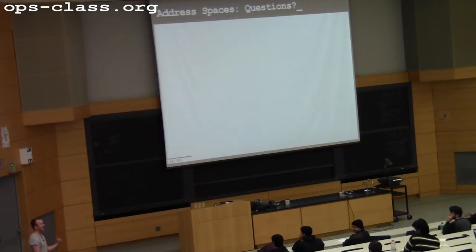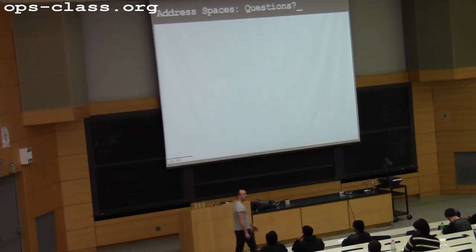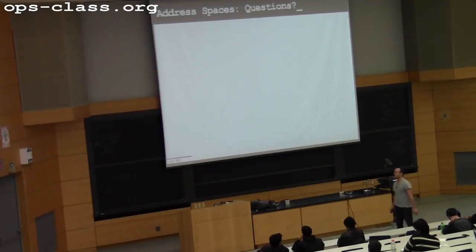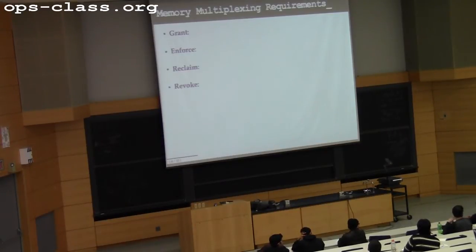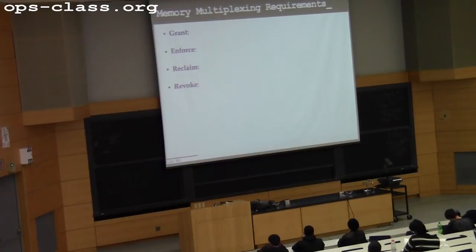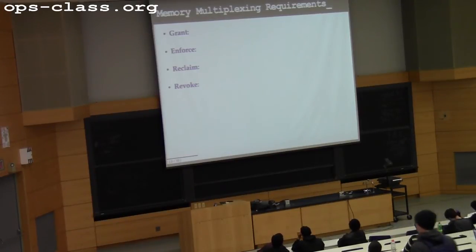Last time we introduced the address space abstraction and discussed the goal — how do we want memory to look to user processes? Remember, we had four multiplexing requirements that we were going to try to achieve in order to perform spatial multiplexing of memory. You're going to grant, enforce, reclaim, and revoke memory.